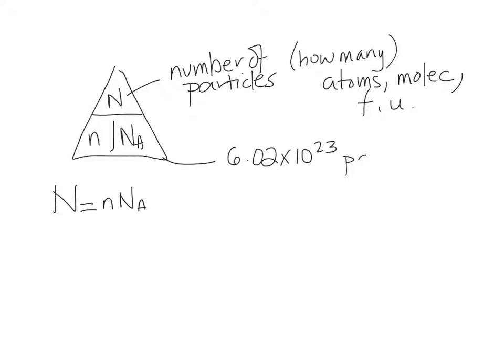NA, where the particle depends on what the substance is - if it's ionic, covalent, or atomic. And then small n is the number of moles, and of course the unit is moles.